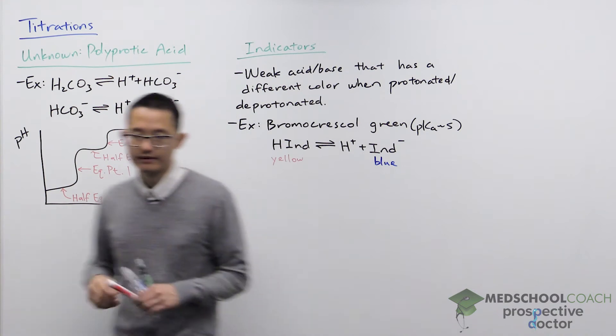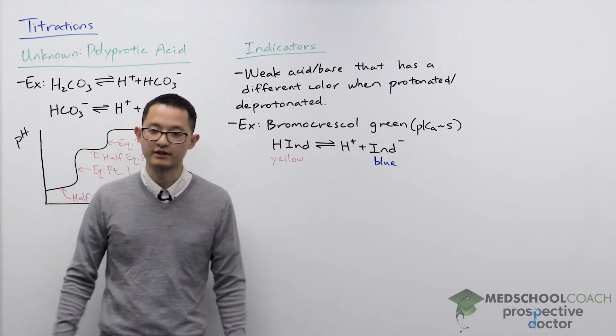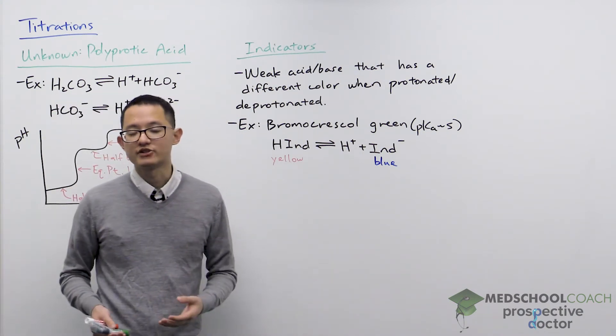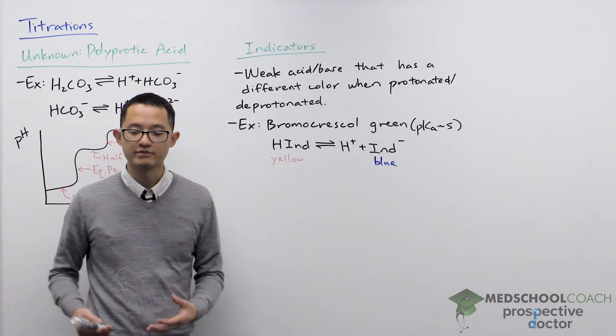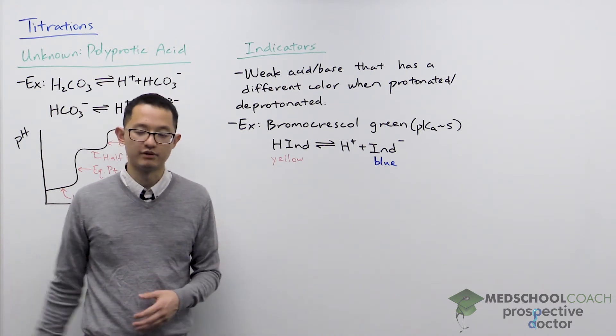Now that we've looked at how polyprotic acids and their titration curves look, let's take a look at pH indicators. pH indicators are weak acid or base molecules that have different colors when they're protonated versus deprotonated.